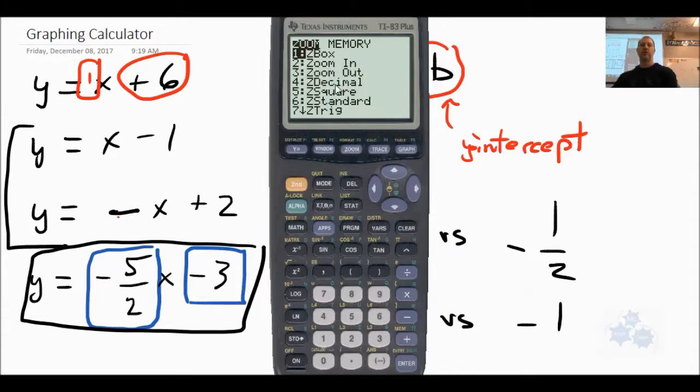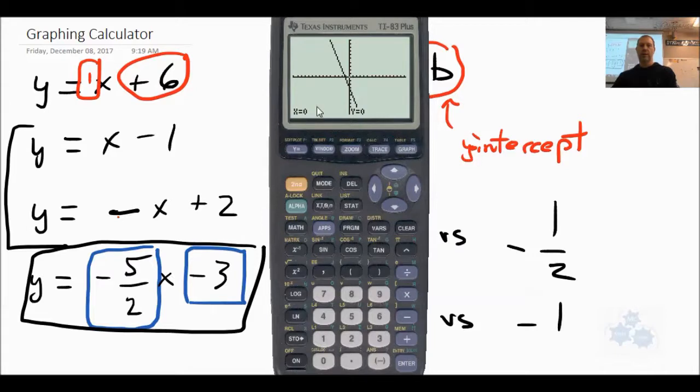Or, if you want to, you can zoom in. See, number 2 is zoom in. You can zoom in. And, right now, it's saying, do you want 0, 0 to be the center of your zoom, or do you want to move it over? So, let's just say yes. Enter. And, see how it zooms in a bit there? Now, we can't see the y-intercept, but that's zoomed in a bit.